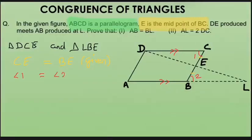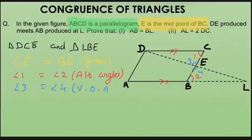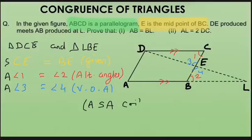So angle 1 equals angle 2 as they are alternate angles. The third pair: angle 3 and angle 4 are vertically opposite angles, so they are equal. We now have three pairs of equal parts — a side between two angles — giving us the ASA criterion for congruency.